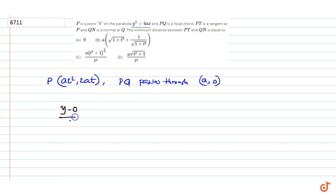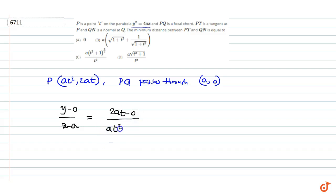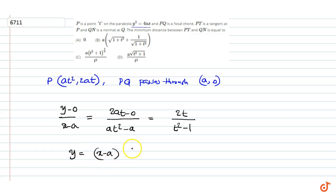(y - 0) / (x - a) = (2at - 0) / (at² - a), which simplifies to 2t / (t² - 1). So y = (x - a) · 2t / (t² - 1).